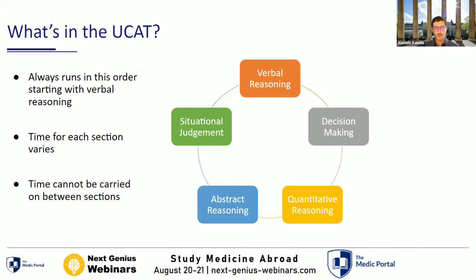Situational judgment is slightly different from the other four sections: the other four have a numerical score, while situational judgment gives a banded score. SJTs come up a lot in medicine — not only for medical school applications, but also in your final year of medical school when you sit an SJT as part of your foundation year one job application. The SJT tests softer skills: communication, empathy, and ethical reasoning, through a variety of scenarios where you rate how appropriate or important various actions are.